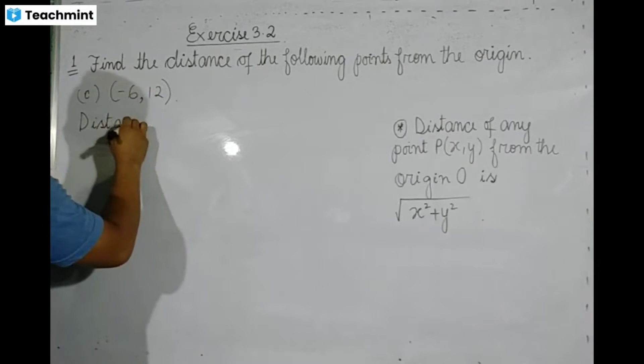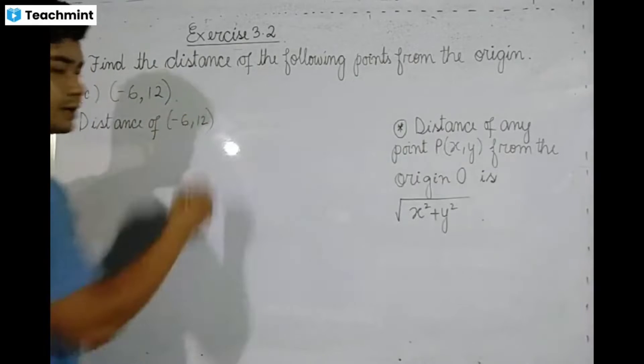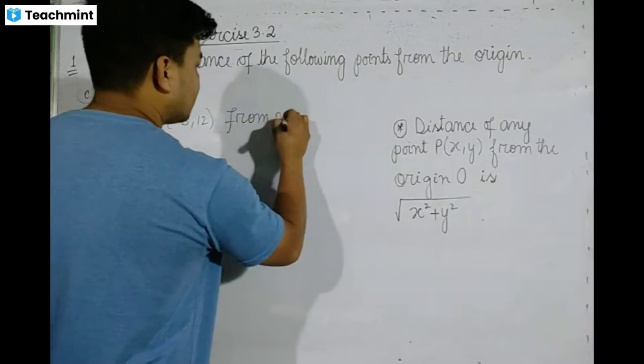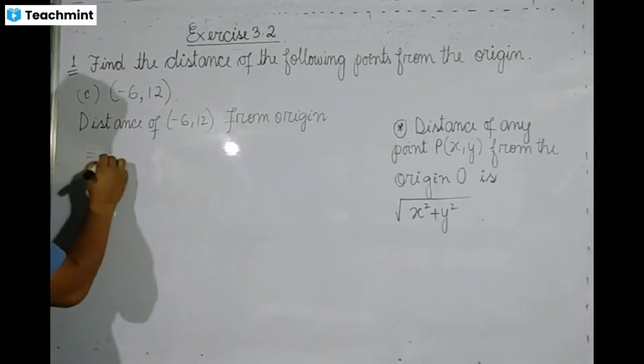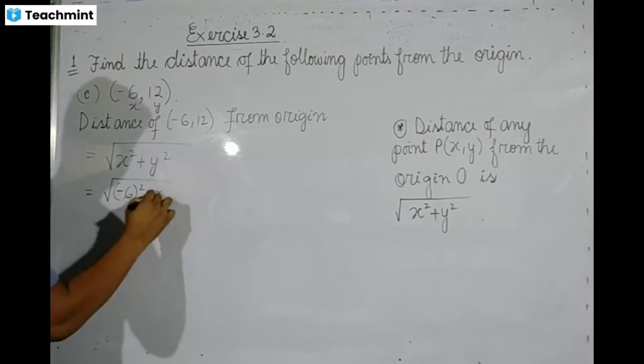Distance from origin. So if you want to say this, the formula is the root over x square plus y square. If you take x and y, minus 6 whole square plus y value is 12 square.